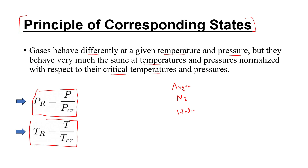Using reduced pressure and reduced temperature, you can compare these gases — carbon, nitrogen, helium — and they are the same. This is the principle of corresponding states.